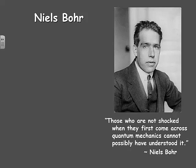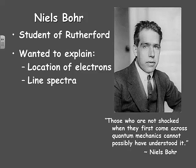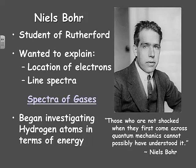Niels Bohr is quoted as saying that those who are not shocked when they first come across quantum mechanics cannot possibly have understood it. Niels Bohr was a student of Rutherford's. He wanted to explain the location of electrons and something known as a line spectrum. The line spectra of different elements differ from one another, and he thought that he could explain that with his model of the atom. We will investigate line spectra in class. He began investigating hydrogen atoms in terms of energy.